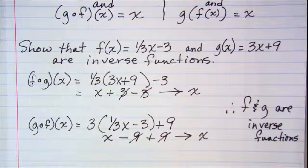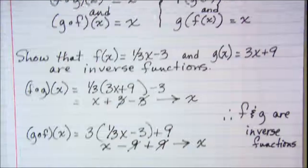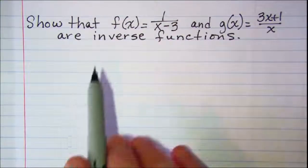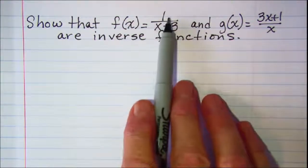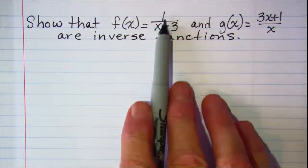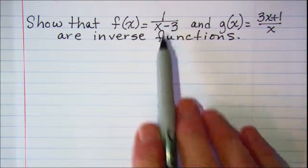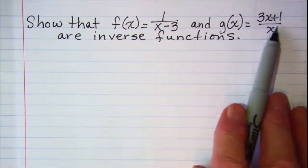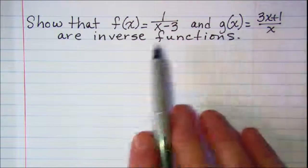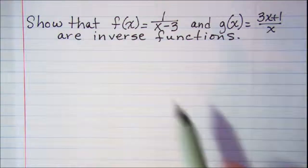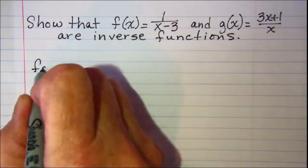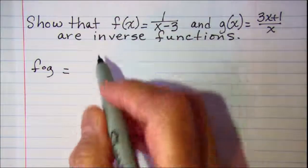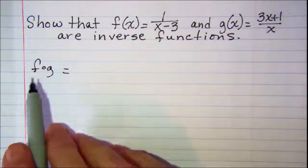Let's do another one that's a little bit more challenging. Here we're asked to show that f of x equals 1 over x minus 3, and g of x equals 3x plus 1 over x, are inverse functions. So again we need to find f composition g and g composition f.